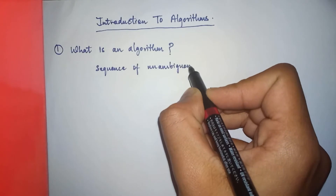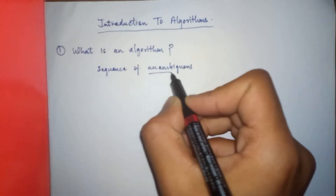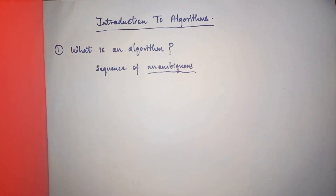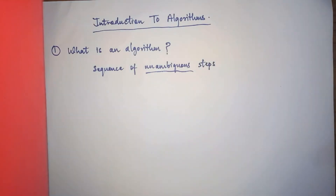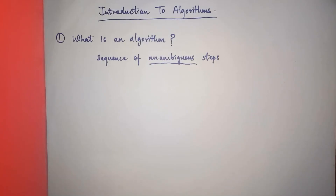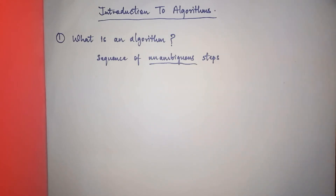Unambiguous is the key word that defines the algorithm — it is a sequence of unambiguous steps meant to solve a particular problem. Any problem in computer science specifies an input-output relation, and the algorithm describes a specific computational procedure so as to achieve that particular input-output relation defined by the problem statement.